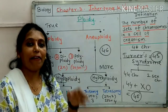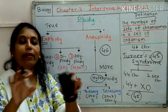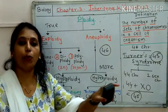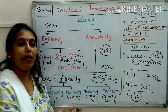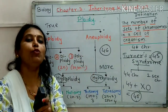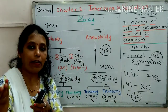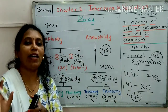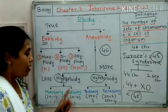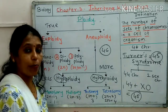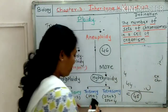Nullisomy means zero. When the gametes are formed, the chromosomes normally distribute equally into the gametes. But here, in one of the gametes no chromosomes are present, so whatever eggs or sperms are formed are non-viable. Trisomy — tri means the number becomes 3.